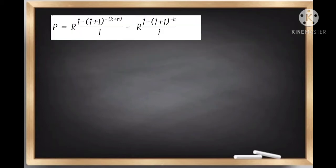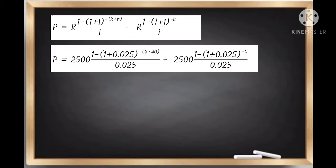Now, we substitute all the given values into our formula. It becomes P equals 2,500 times 1 minus 1 plus 0.025 raised to negative 6 plus 40, divided by 0.025, minus 2,500 times 1 minus 1 plus 0.025 raised to negative 6, divided by 0.025.